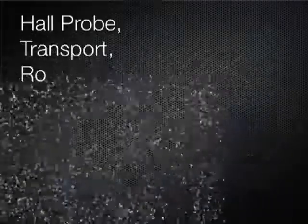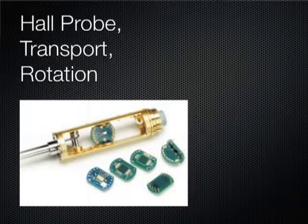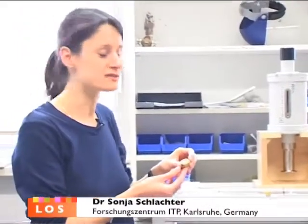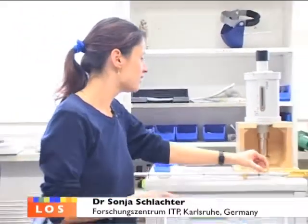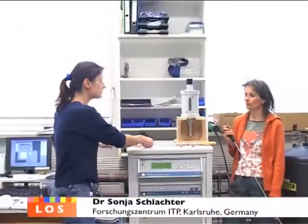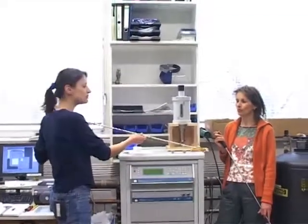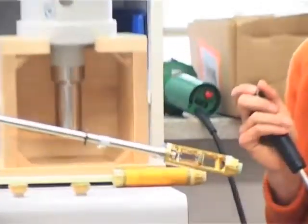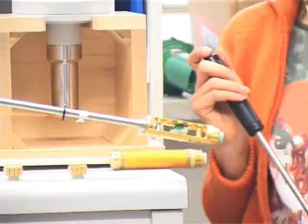With this system, we can make Hall probe measurements, for example, with this sample holder. This is a sample holder to make resistivity measurements. With this sample holder, we can even rotate samples in the cryostat in a magnetic field to measure angular dependencies. The advantage of this PPMS system is that it can be controlled remotely.